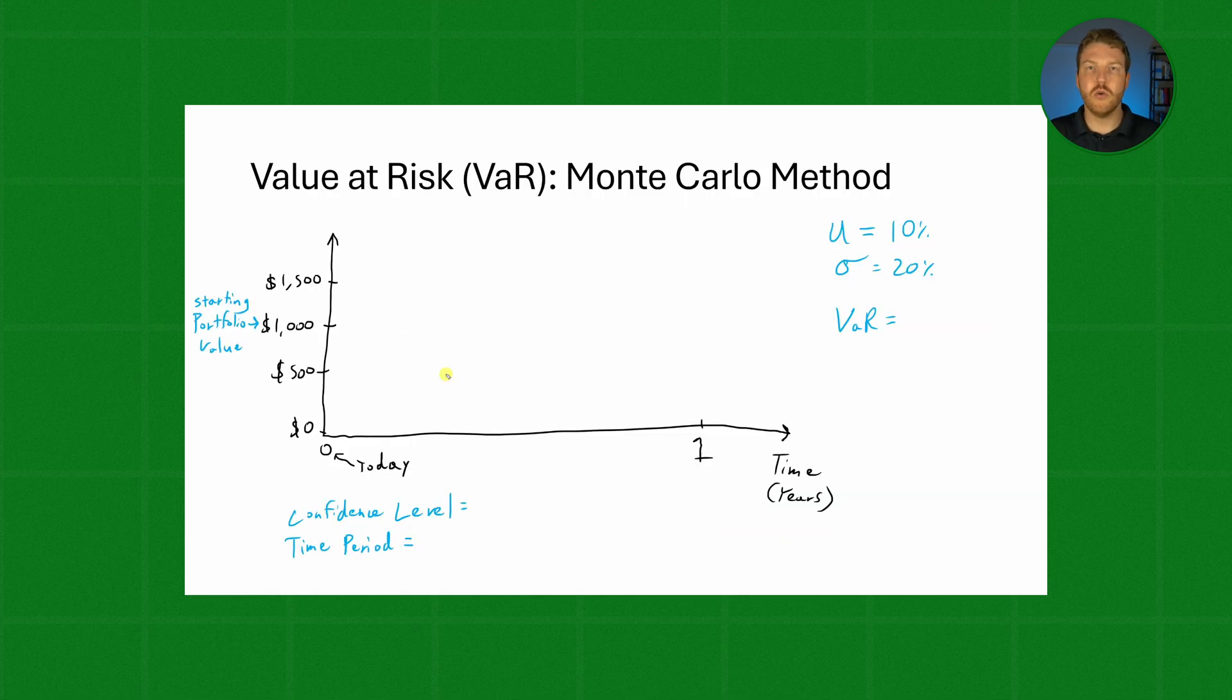It'll look something like this. In order to calculate the VaR, let's assume that our starting portfolio value is $1,000, and our expected return for one single year is 10%, and we have a 20% standard deviation. Now let's assume that we're going to try to calculate this VaR for a 95% confidence level and a one year time period.